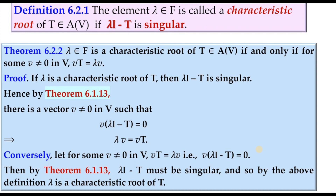Now we have the formal definition of a characteristic root of T. The element lambda in F is called a characteristic root of T, which is a linear transformation, if lambda I minus T is singular. A transformation which is invertible is called regular, and a transformation which is not regular is called singular.